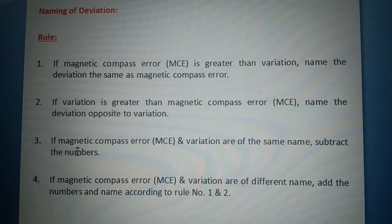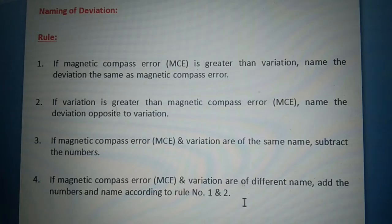Number three: if magnetic compass error and variation are of the same name, subtract the numbers. Number four: if magnetic compass error and variation are of different names, add the numbers and name according to rule number one and number two.